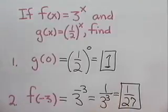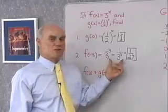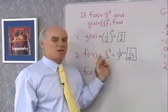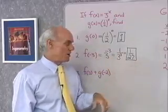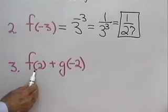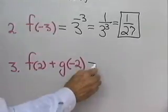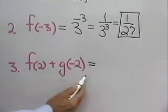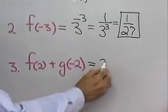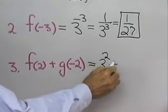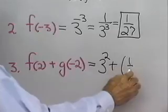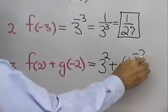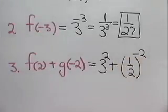Exponential functions work just like regular functions — when I want to find the value of the function, I just replace x with that value and simplify it. Let's look at one more of these problems. I have f of 2 plus g of negative 2. Well, f is 3 to the x, so I'll make this 3 to the 2, plus g of negative 2 is going to be 1 half to the negative 2 power.